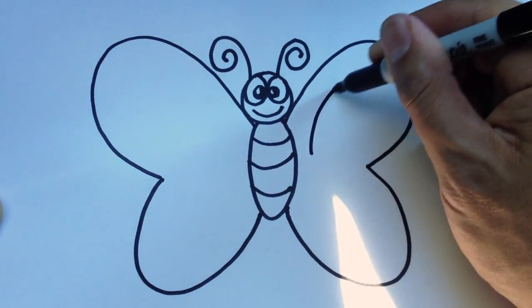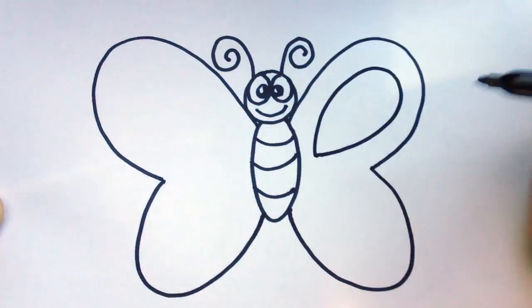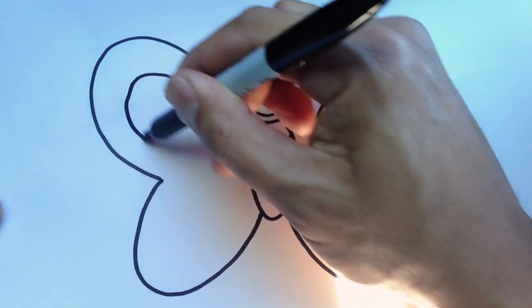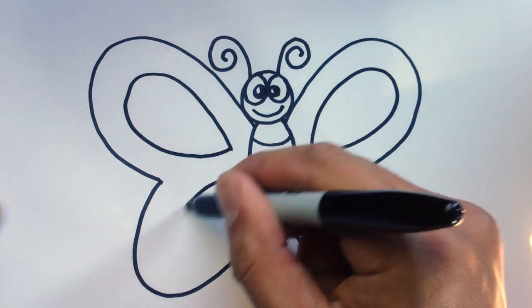Now on this side, I'm just going to draw some shapes inside the wing on the top, and then on the bottom.